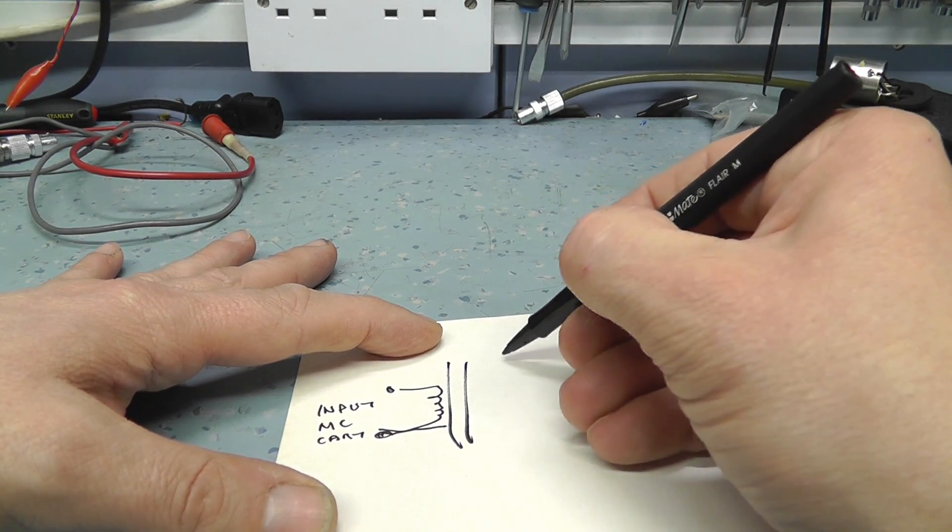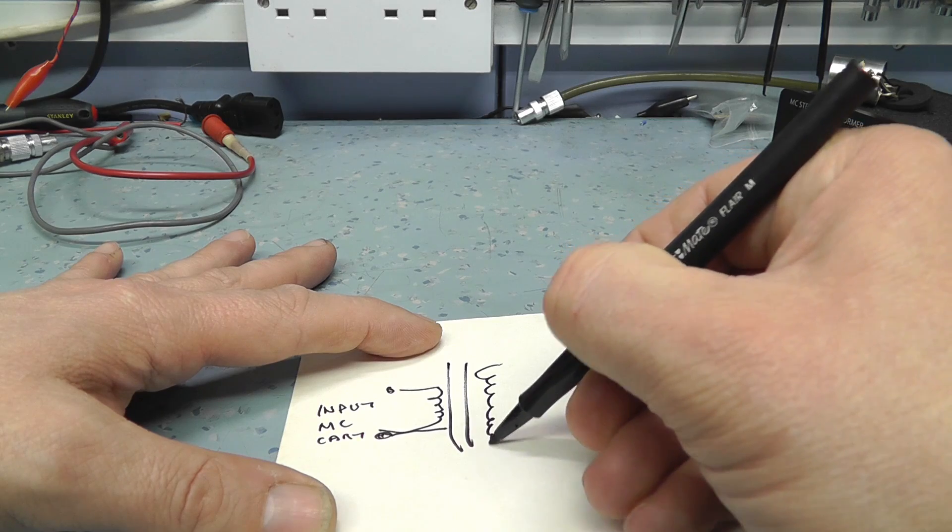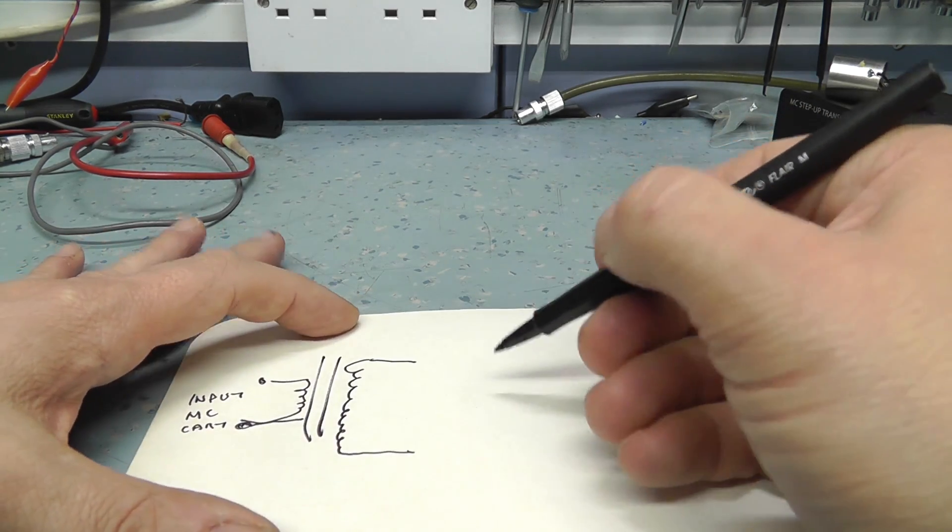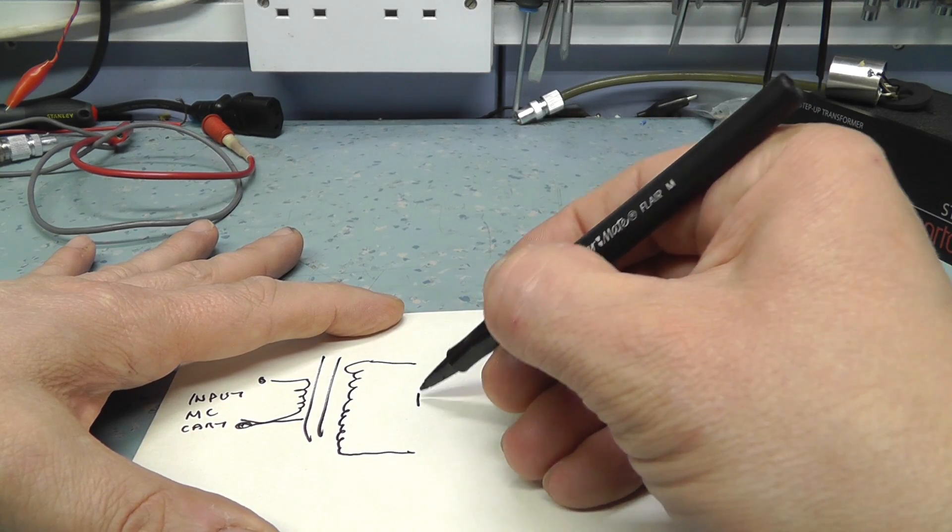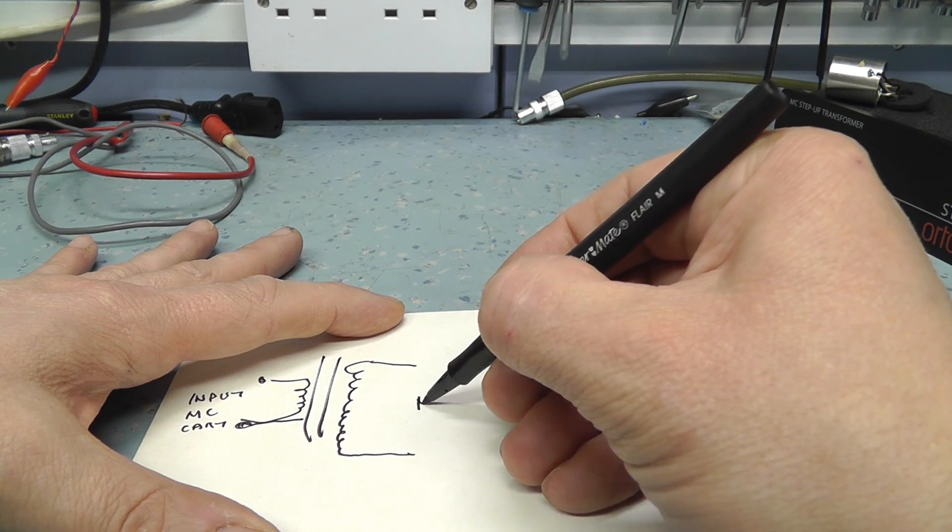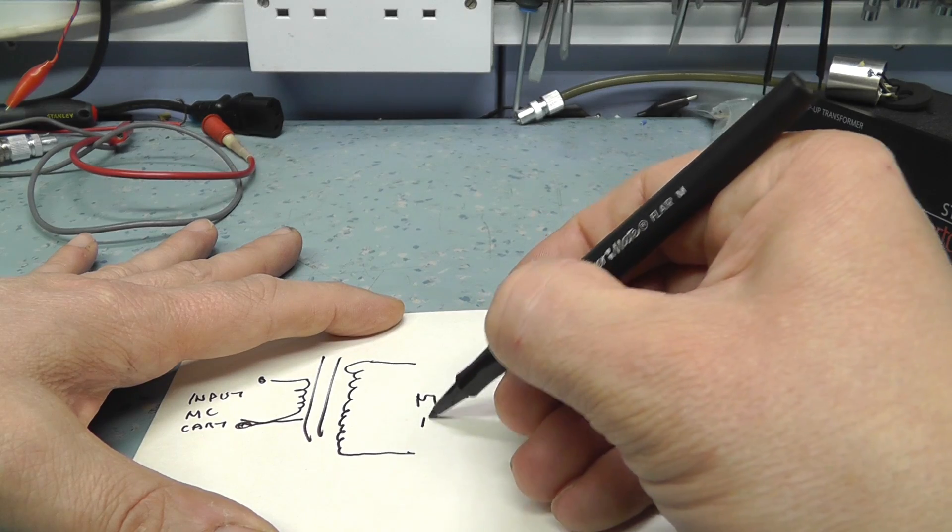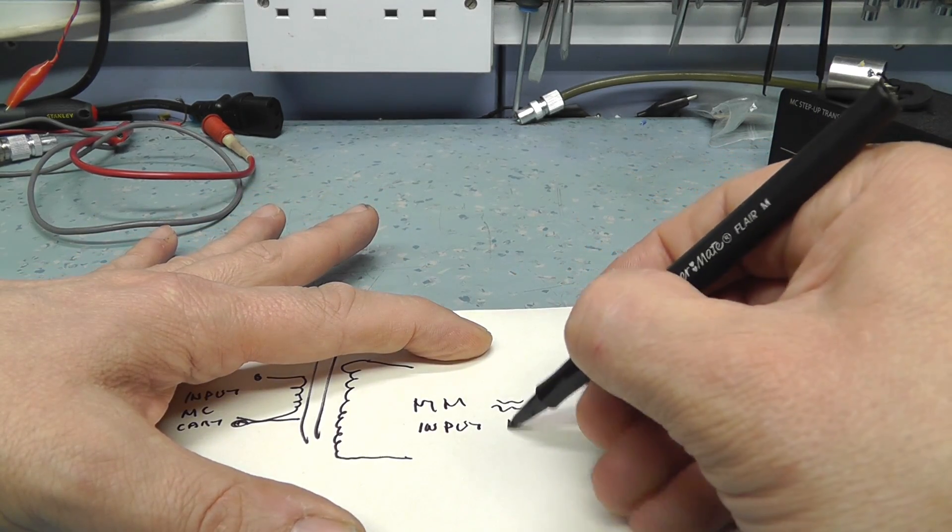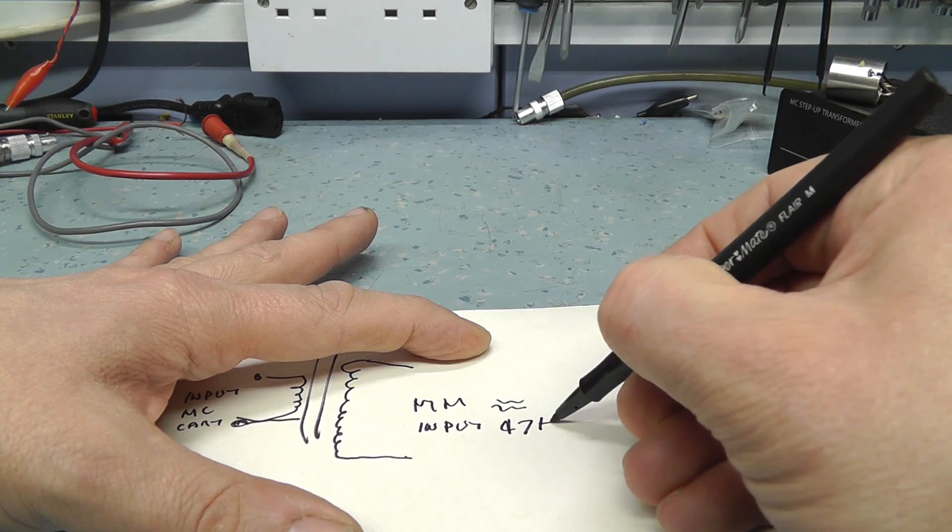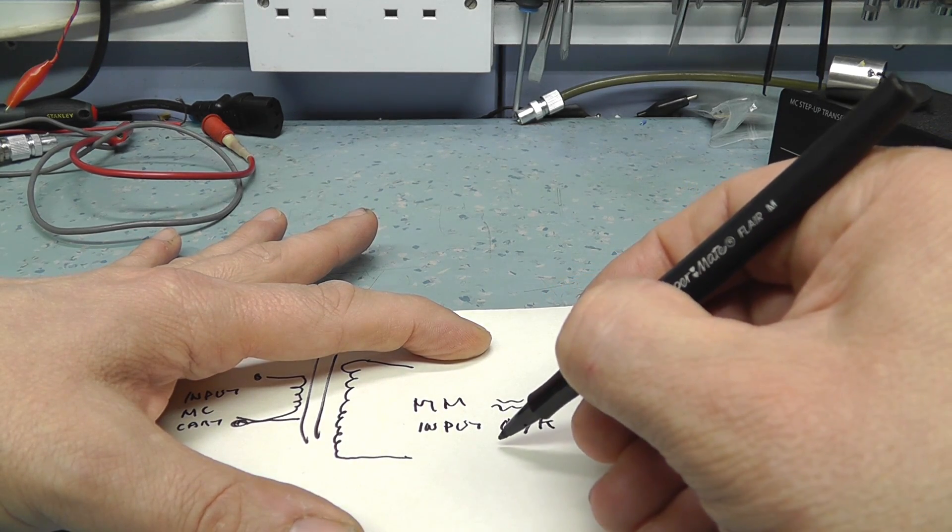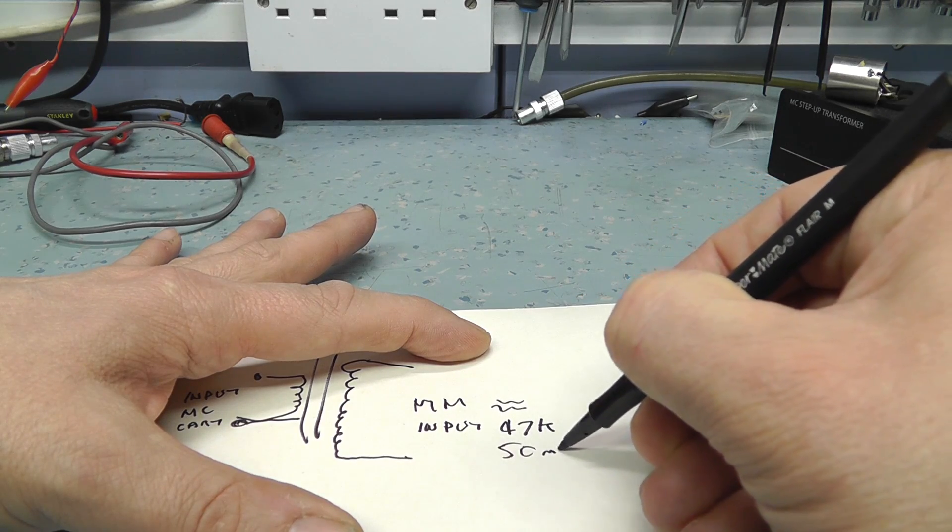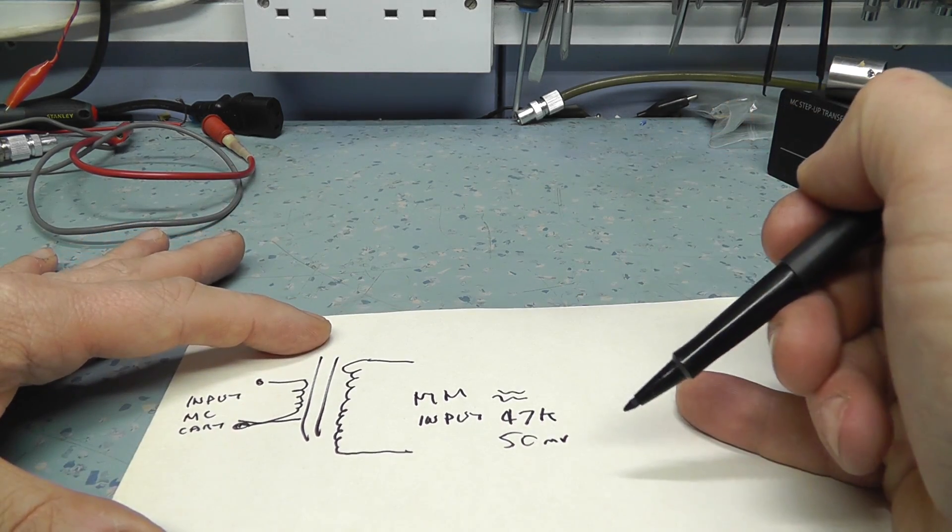Then you've got the transformer and then you've got the output, which has got more turns on it. And that goes to your preamp or moving magnet input. And that's approximately 47K at a maximum of probably 50 millivolts. So that's your standard moving magnet input.